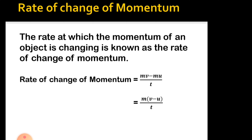Rate of change of velocity is acceleration, calculated as change in velocity divided by time taken. Similarly, the rate of change of momentum is the change in momentum divided by time taken. Since change in momentum is MV − MU and mass is the same, we can write the rate of change of momentum as M(V − U) / T.